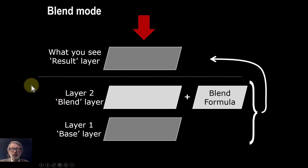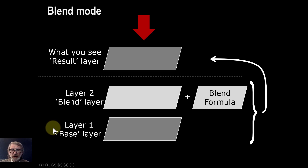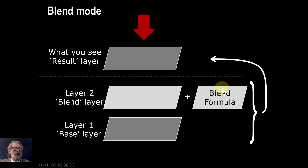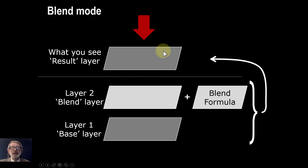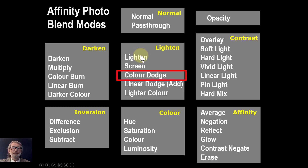As a quick reminder, in Affinity you have a base layer underneath, then a blend layer on top of that. Associated with that is the blend formula — in this case it's Color Dodge — and what you see is a kind of virtual layer which is called the Result.